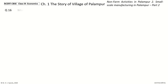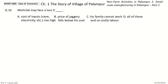Question 16: Mishrilal may face a loss if dash. Options: Cost of inputs — cane, electricity, etc. — rise high; Price of Jogari falls below his cost; His family cannot work and so costly labor; All of these. The answer is All of these. So Mishrilal may face a loss if input costs rise, Jogari price falls, or his family cannot work and labor becomes costly.